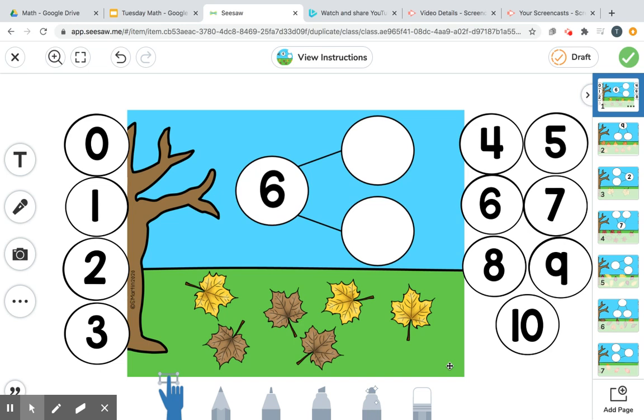Okay guys, let's do some number bonds today. As you can see we had six little leaves that fell off the tree. That's our whole. That's how many we have all together. So we put it right here. We have six.